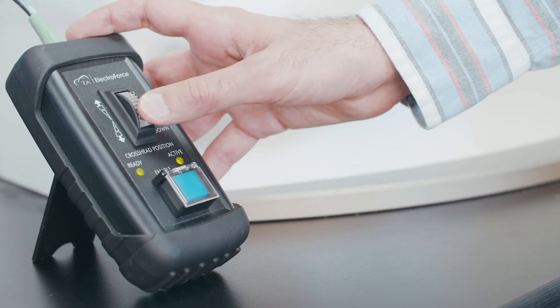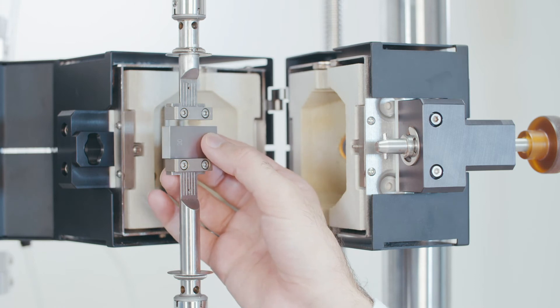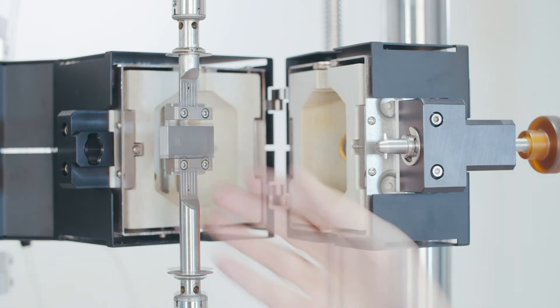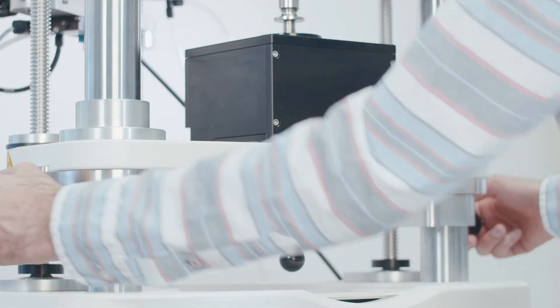With the power off, bring the lower grip down using the lift. Put the standard block on the lower grip. Move the lower grip up until the top of the gauge block is very close to the upper grip but not touching it. Lock the column clamps.